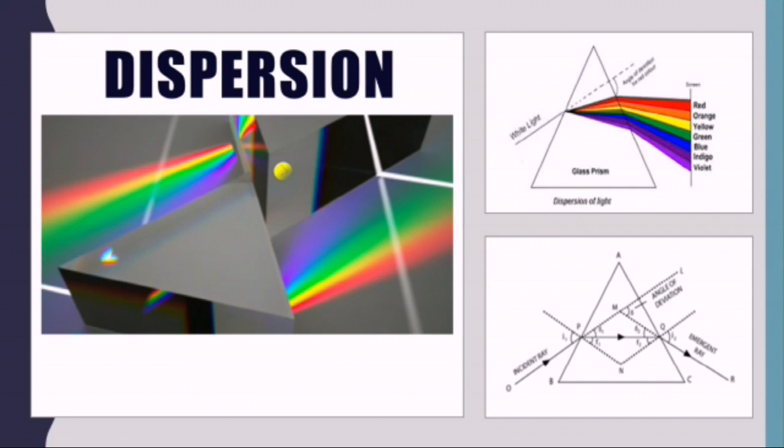Dispersion. Dispersion is a phenomenon in which white light is incident on a refracting surface, like in this case there is a prism. As we know, white light consists of seven colors and each color has different wavelengths, so each color is deviated through a different angle.